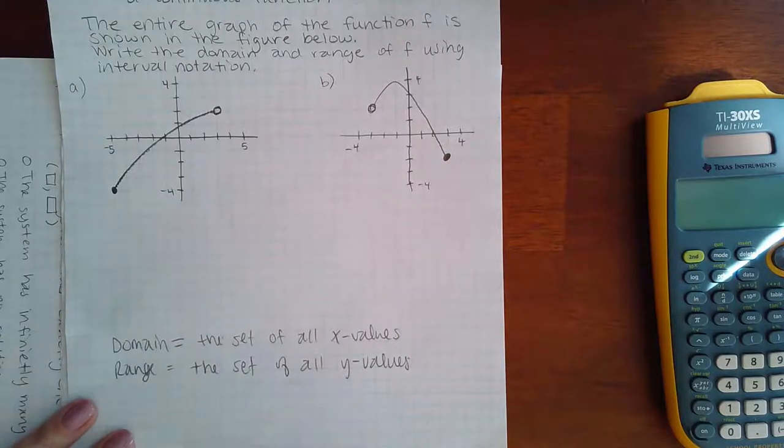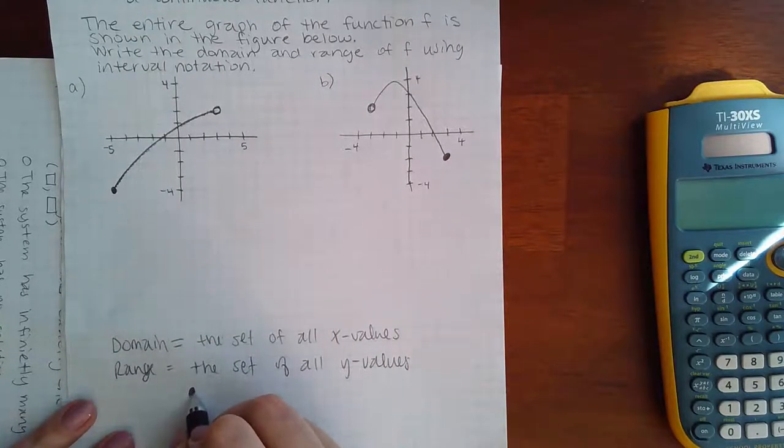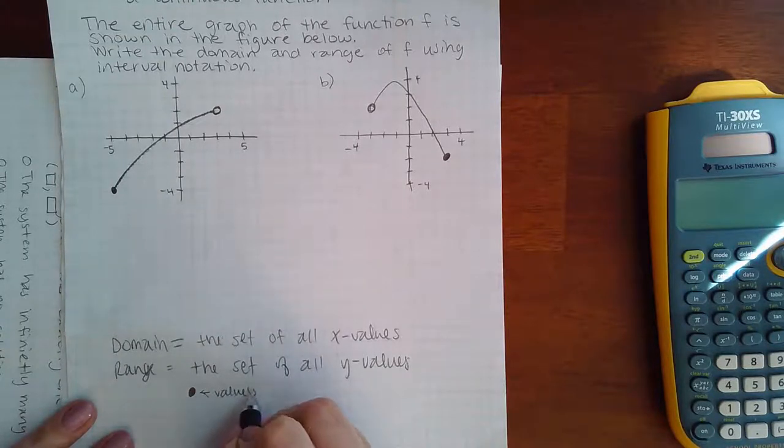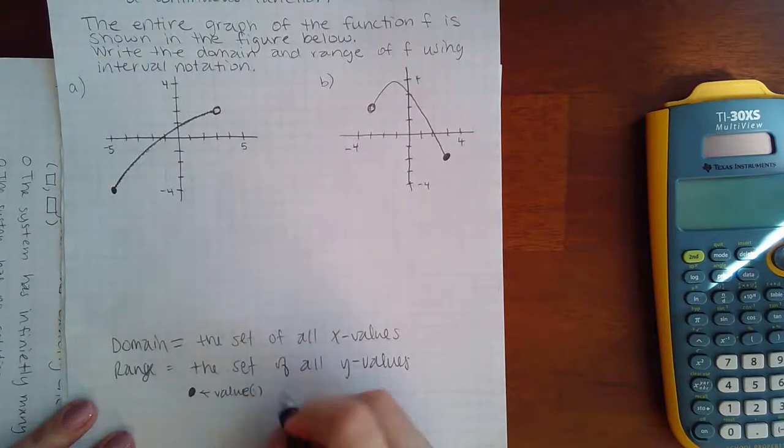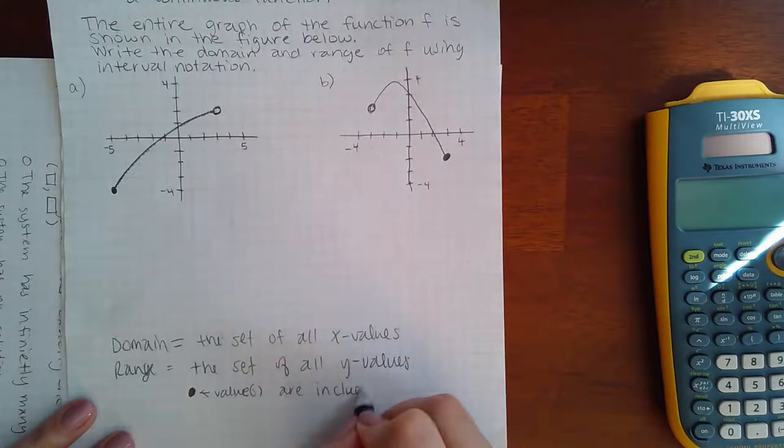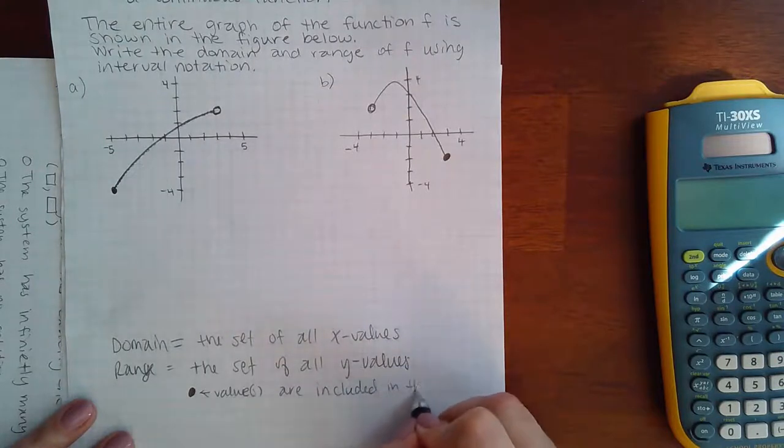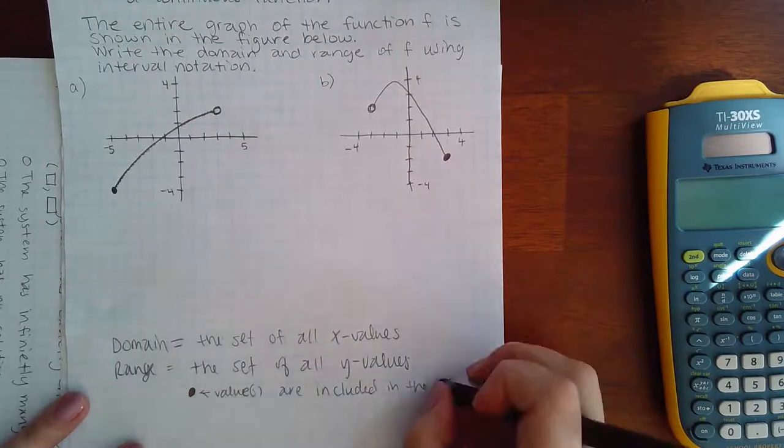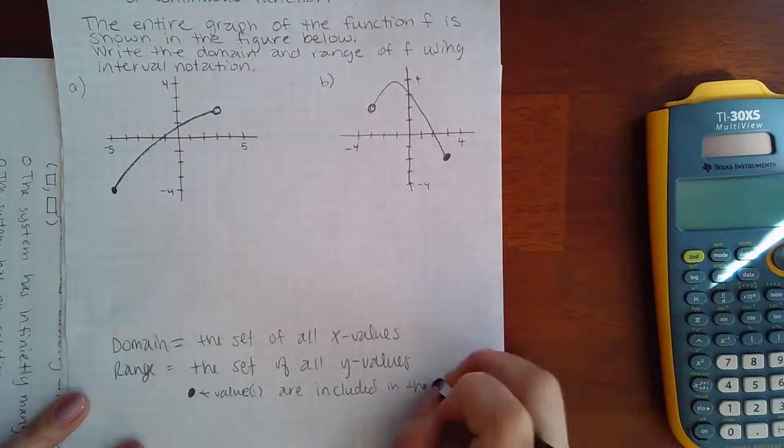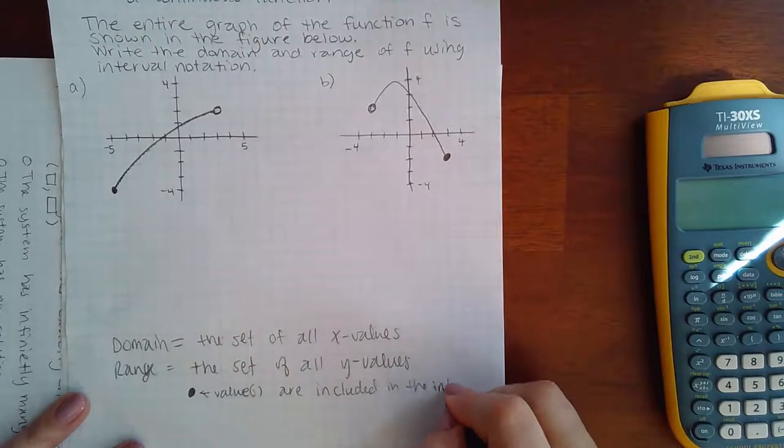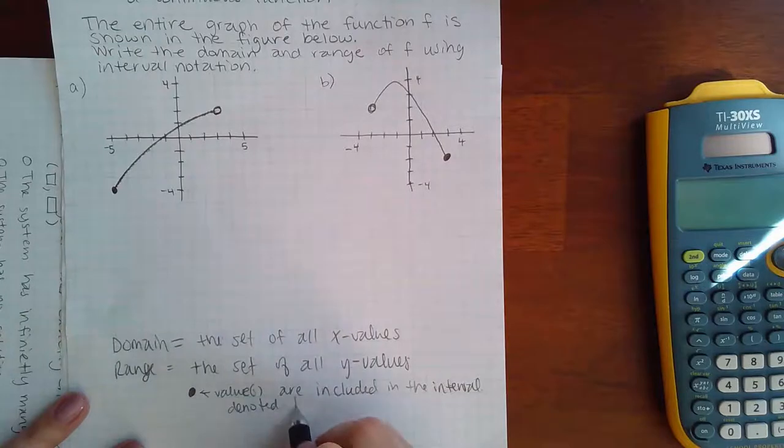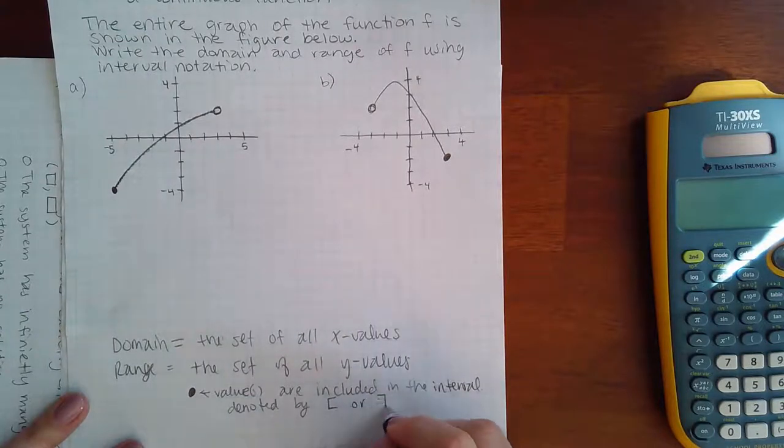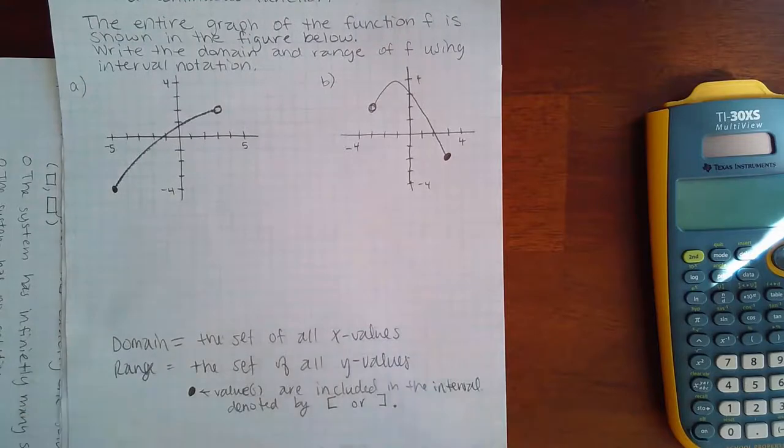Another thing we need to know is that if you have a solid dot, that means that the value or values are included in the set, in the interval, I should say, because we've got to use the interval, and they are denoted by a bracket like this or a bracket like that, depending on where the dot is at.